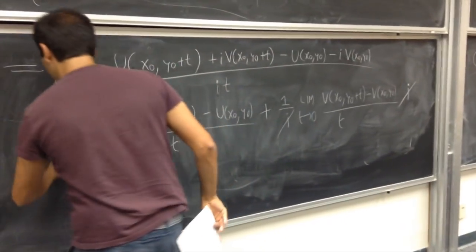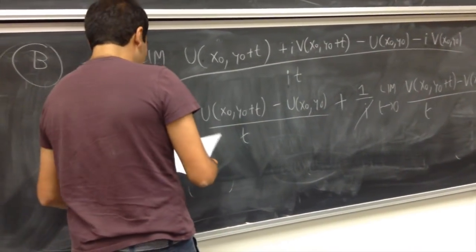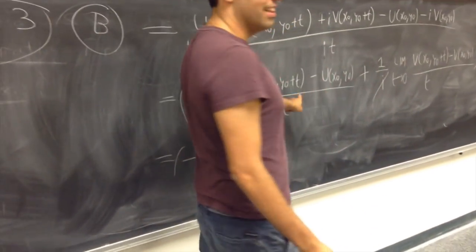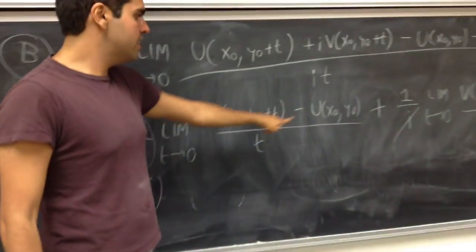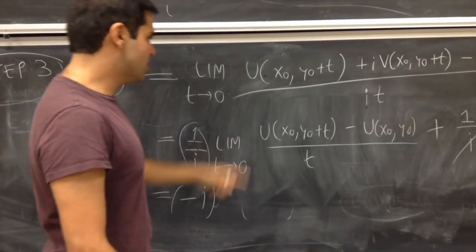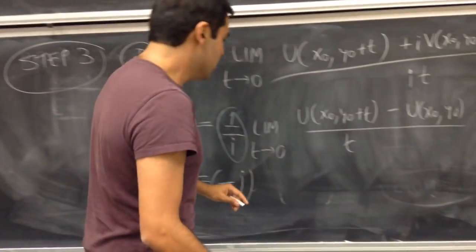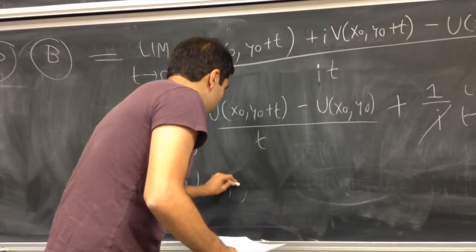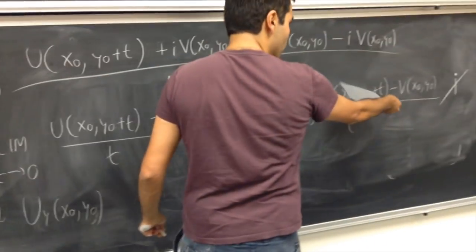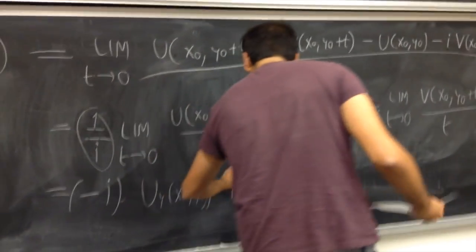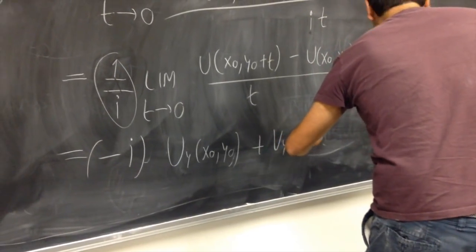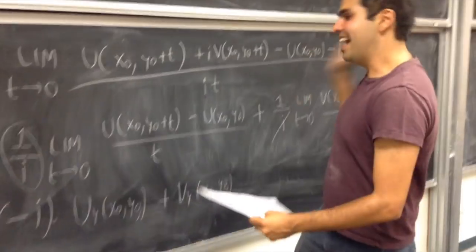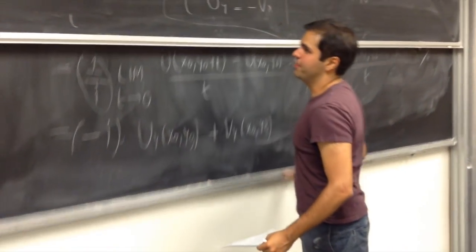So you have minus i times this limit, but here we have the limit in the y variable, which means this actually gives you the y-derivative of u: u_y of x-naught y-naught. And the same here — we have the y-derivative of v: v_y of x-naught y-naught. Great, we have a, we have b, let's just put them together.